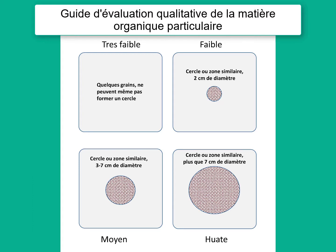Here is a simple visual rating scale for particulate organic matter, based on experience with a number of soils. In practice, the comparisons between soils of similar types or in the same region can be helpful in addition to this rough absolute rating scale.